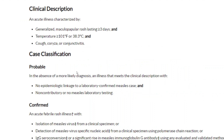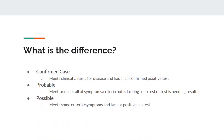Here's another case definition for measles, stratified by confirmed, probable, and a general clinical description. For a confirmed case, there must be isolation of measles virus in a clinical specimen — some sort of lab test is required. A confirmed case meets clinical criteria and has a lab-confirmed positive test. Probable meets most or all symptoms but is lacking a lab test or has a test pending. Possible is more relaxed. Not a case for an outbreak could mean it's out of the time period, no symptoms, no lab tests, or negative lab tests.